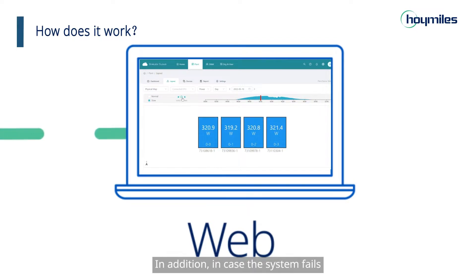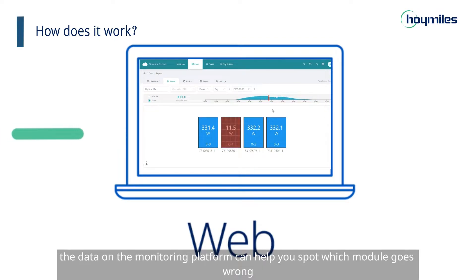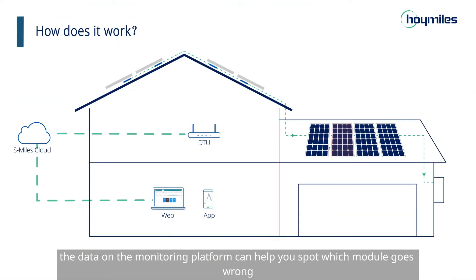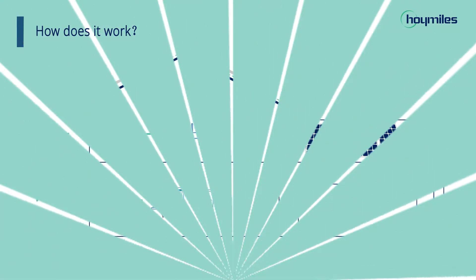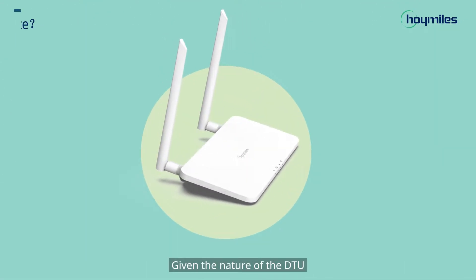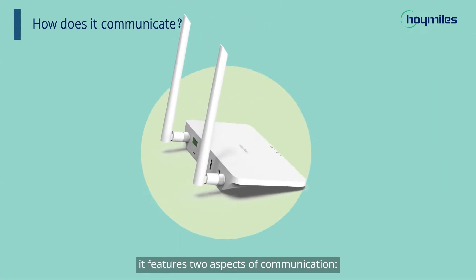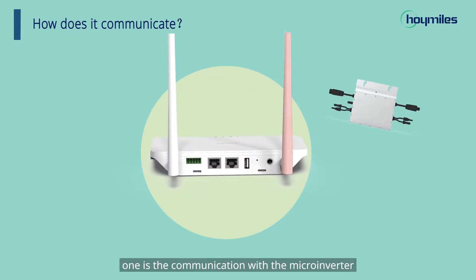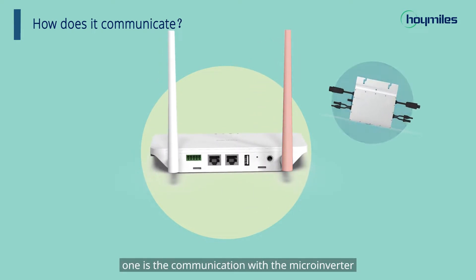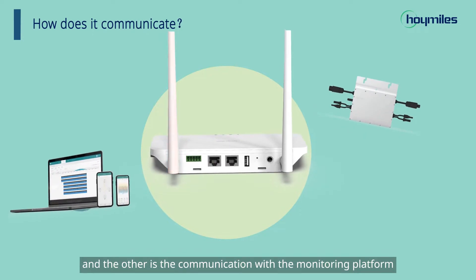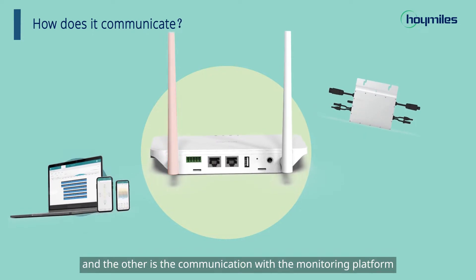In addition, in case the system fails, the data on the monitoring platform can help you spot which module goes wrong. Given the nature of the DTU, it features two aspects of communication: one is the communication with the microinverter, and the other is the communication with the monitoring platform.